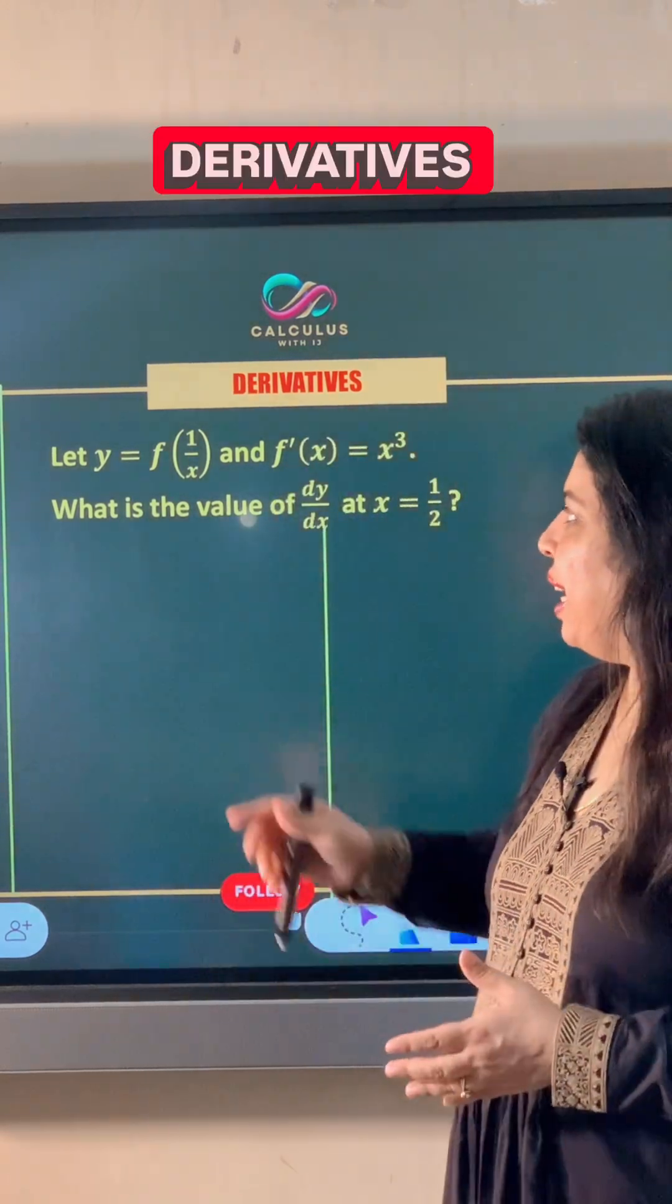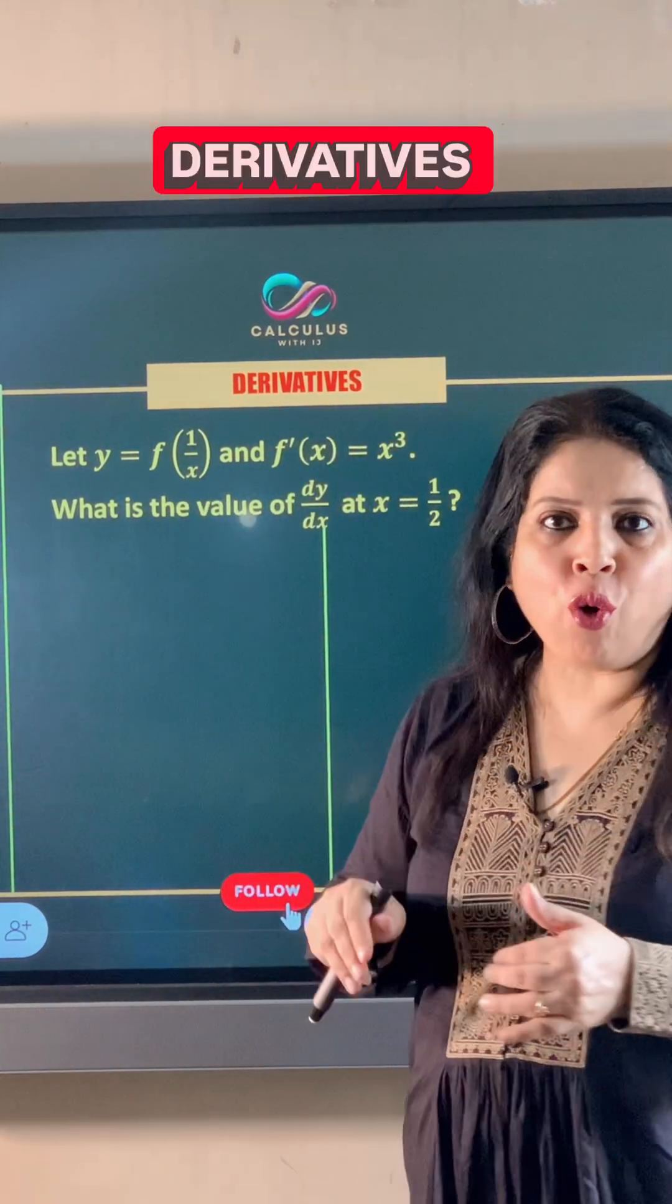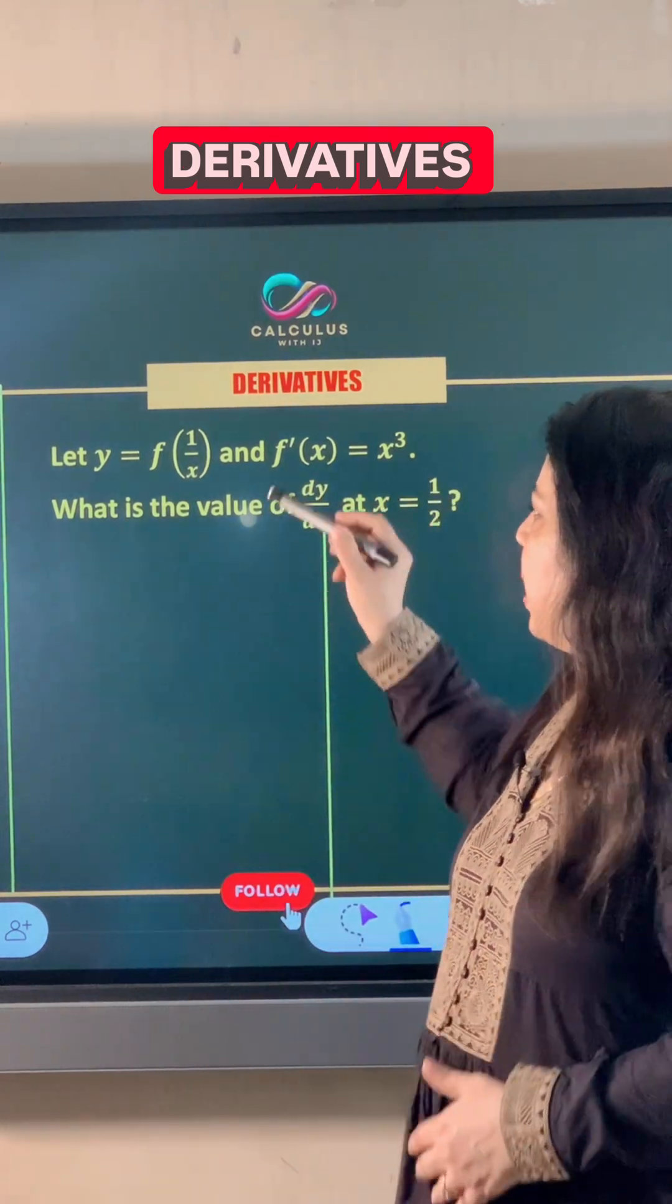In this derivatives question, it is given that y equals f of 1 upon x and f dash x is x cube.